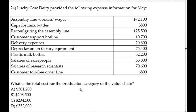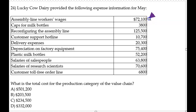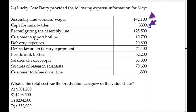So the first one that you would have would be the assembly line workers' wages. The caps for the milk bottles — this is a dairy — would also be one.